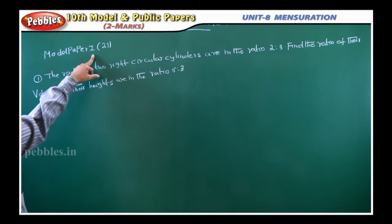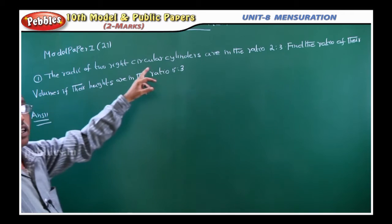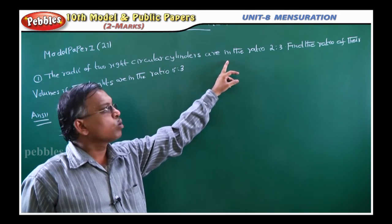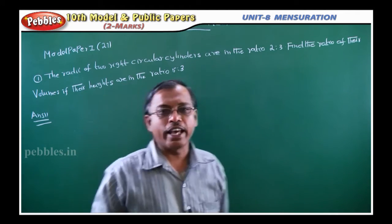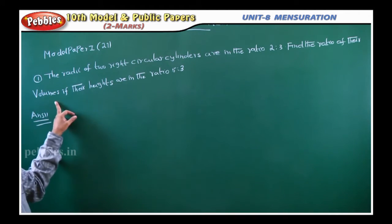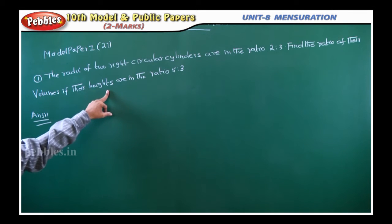Model number one, question number 27. The radii of two right circular cylinders are in the ratio 2 is to 3. Find the ratio of their volumes if the heights are in the ratio 5 is to 3.